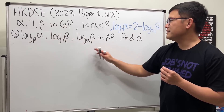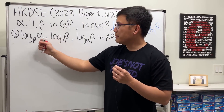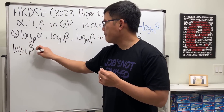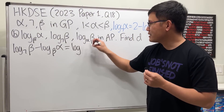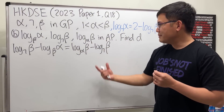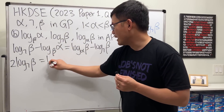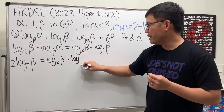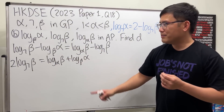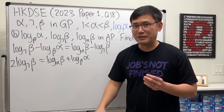For part B, these three terms are in arithmetic progression, so consecutive differences are equal. We set up: log₇β − log_β(α) = log_α(β) − log₇β. Rearranging gives 2·log₇β = log_α(β) + log_β(α). Since we have log base 7 terms on the left, it's a good idea to convert the right side using the change of base formula.